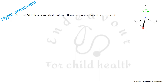Arterial ammonia level estimation is ideal, but free-flowing venous blood may also be used conveniently for determination of hyperammonemia status in the patient with acute liver failure. Ammonia is detrimental and is the reason for most of the complications occurring in patients with acute liver failure.